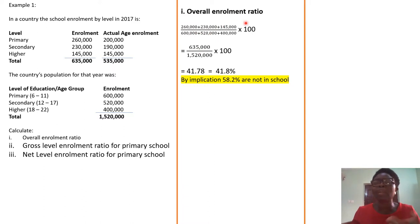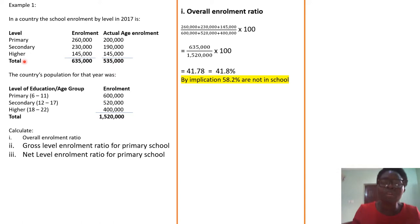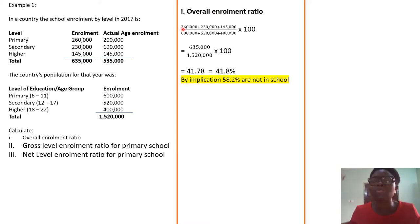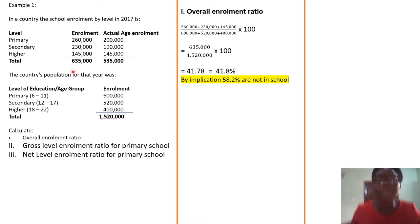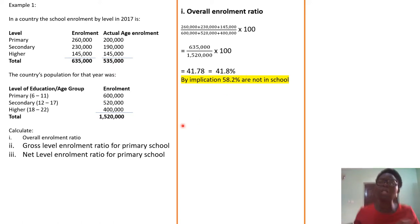Let's take the first one: the overall enrollment ratio. We are taking all enrollment, overall, irrespective of the level and irrespective of the age. Primary gives us 260,000; secondary school gives 230,000; higher institution gives 45,000. The total number enrolled is 635,000. Over the total population of 1.5 million, that gives you approximately 41.8%.